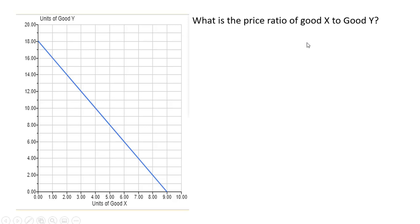The first question is, what is the price ratio of good X to good Y? The price ratio is the price of good X divided by the price of good Y. If we calculate the slope of the budget line, rise over run, 18 over 9, it's downward sloping so we get a slope of minus 2.